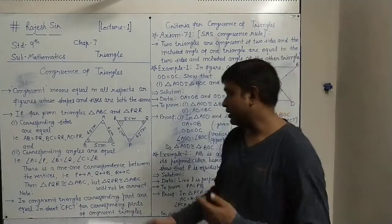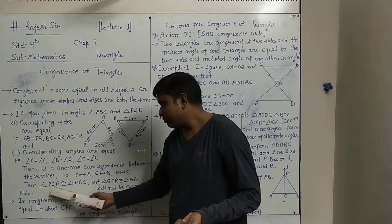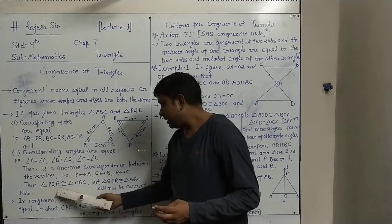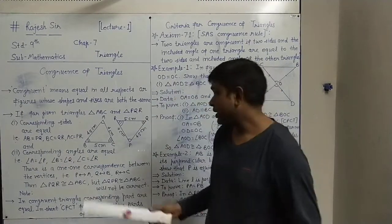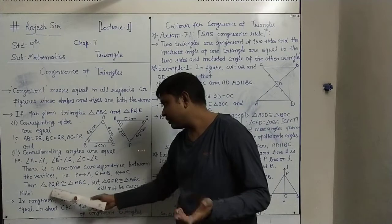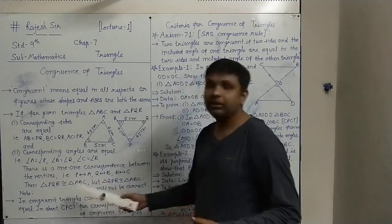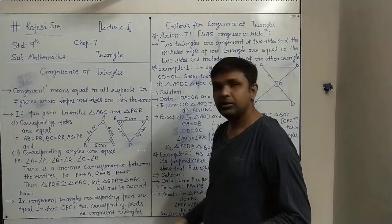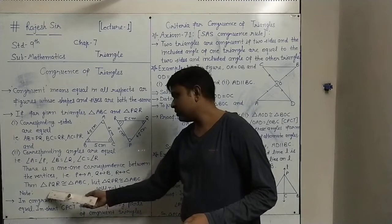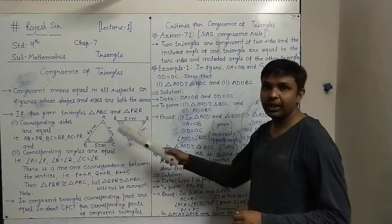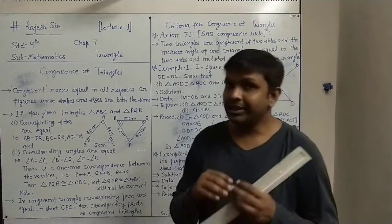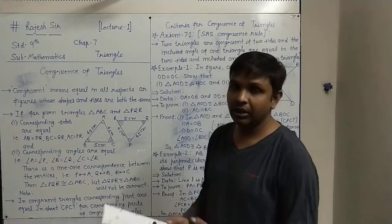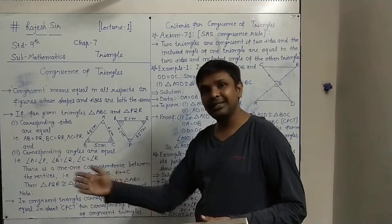Only this way can we say both triangles are congruent in this correspondence. But if you change the order — for example triangle QRP congruent to ABC — that will be incorrect. It is very, very important to maintain the correspondence between the vertices, and only in that order can we write the congruence statement. We can understand that all three corresponding sides and all three corresponding angles are matched in order.